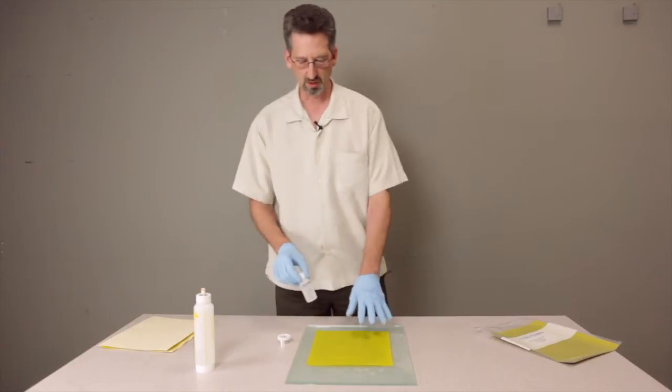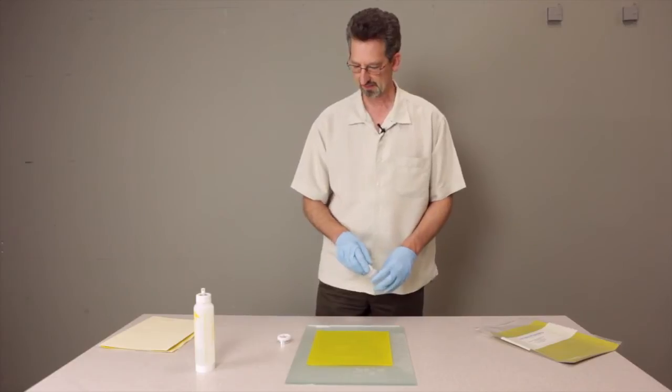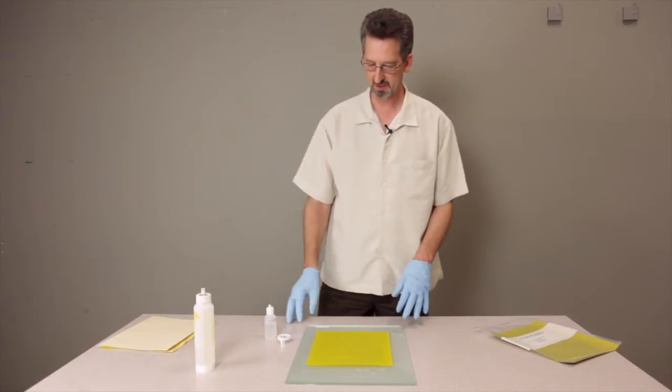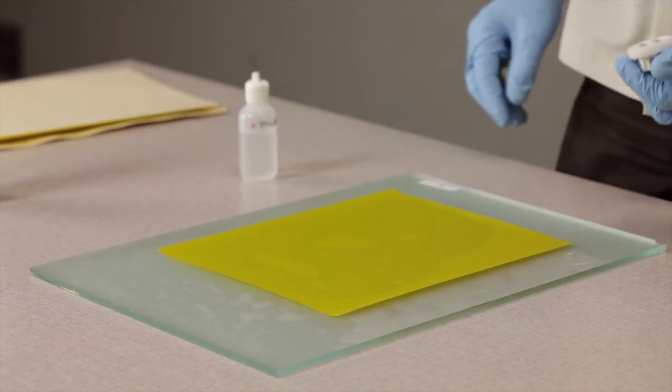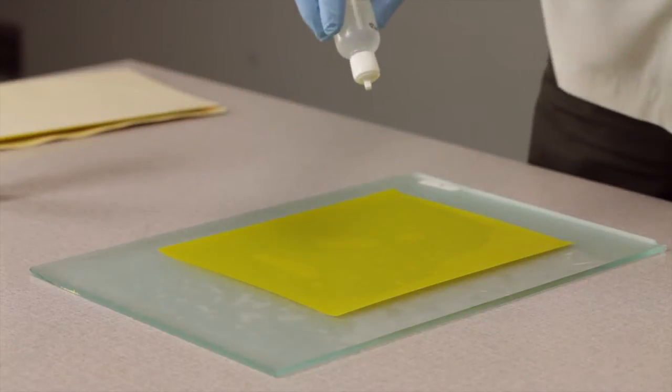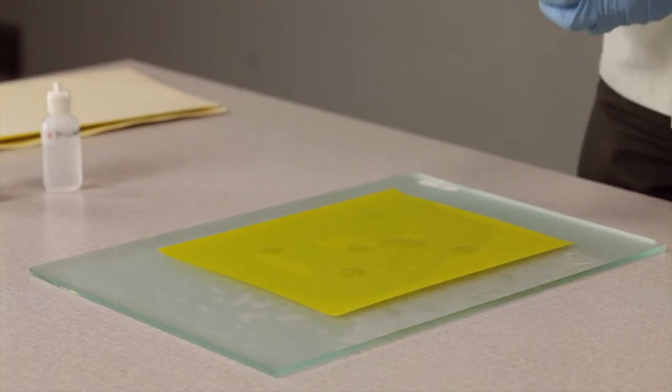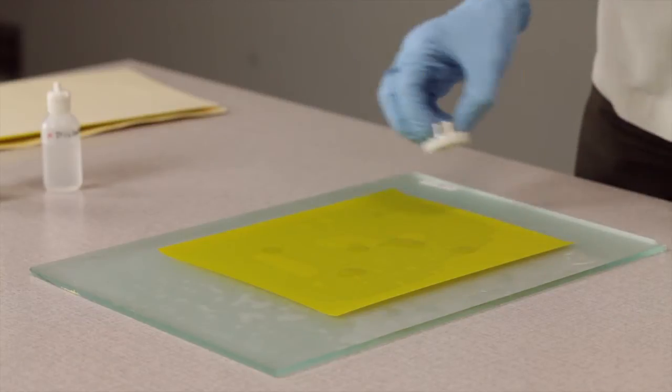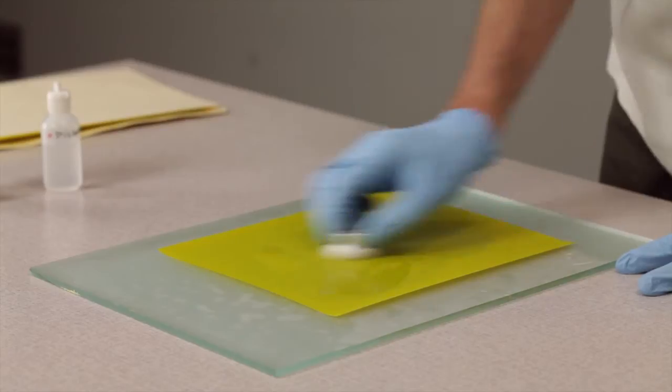So for our lubricant, we use Stoddard solvent, a non-aromatic hydrocarbon. And that's going to sort of smooth our way through the polishing. We'll add, you know, half a dozen or so drops. And that's enough for lubrication. We don't want to make it super wet because then the sample is just going to be floating over the surface.